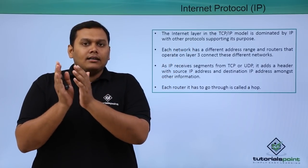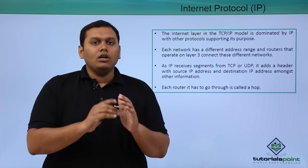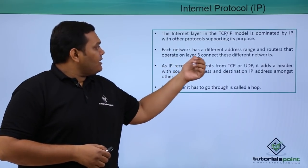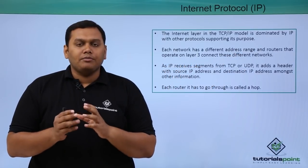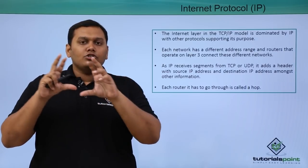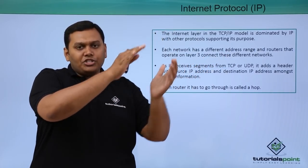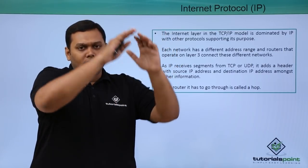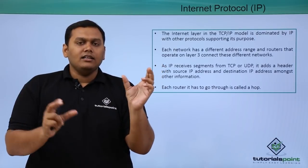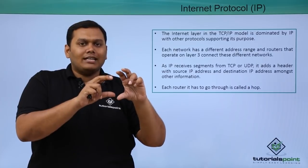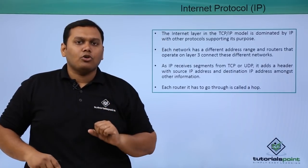This internet layer is dominated by the internet protocol, and other protocols support it to perform its functions. Each network has a different address range, and routers that operate at Layer 3 connect to these different networks — meaning routers have this IP protocol. The entire network is segregated into small networks, and these routers allow one switch network to communicate with another through IP routing.